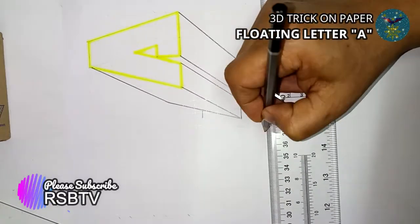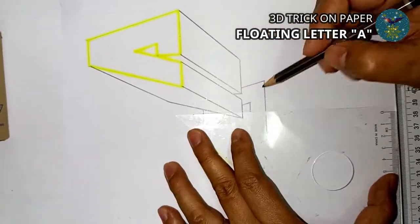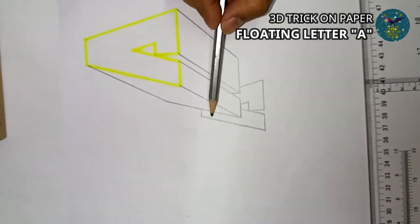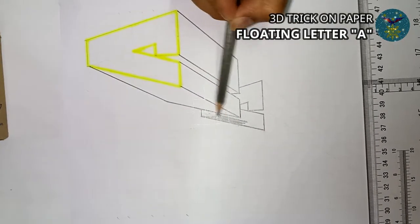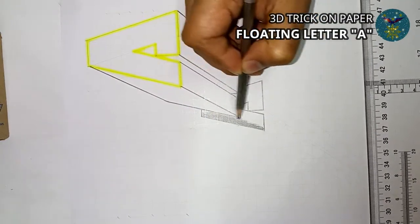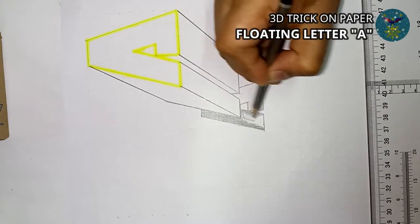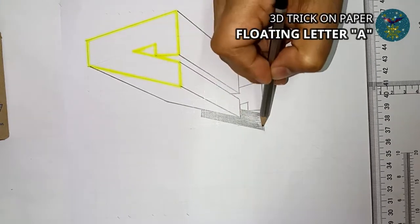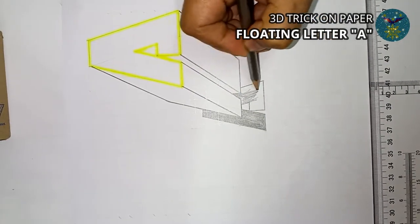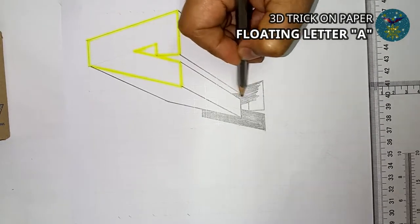Draw the shadow of object letter A as per the line of projection, then shade the end shadow using Derwent Academy sketching pencil 4B till it become black or dark.